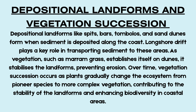Vegetation stabilizes depositional landforms. On sand dunes, pioneer species such as marram grass colonize bare sand, beginning the process of plant succession. Over time, the dunes develop layers of soil and support more complex vegetation communities. Similarly, salt marshes develop behind spits in low-energy environments. These marshes go through vegetation succession from pioneer species such as eelgrass to a fully developed halophytic ecosystem.